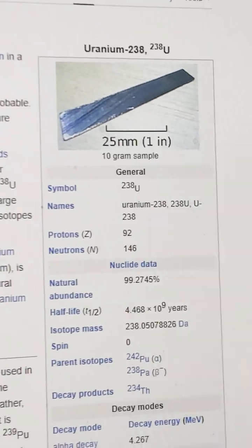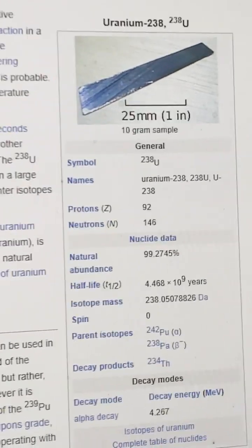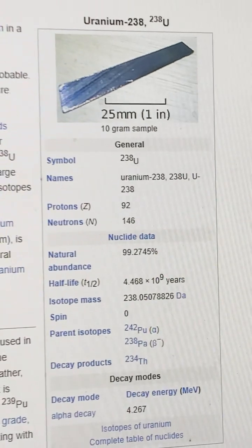Most of the uranium is uranium-238, which has a half-life of 4.468 billion years.